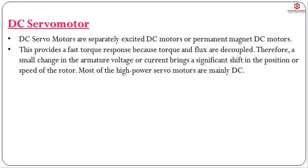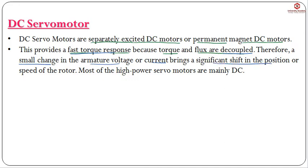Now let us see what is a DC servo motor. DC servo motors are separately excited DC motors, meaning the armature winding uses a separate source and the field winding uses another excitation source. They are also permanent magnet DC motors. DC servo motors provide a fast torque response because torque and flux are decoupled — flux is produced in the field winding and torque is produced in the armature. Most high power servo motors are mainly DC.